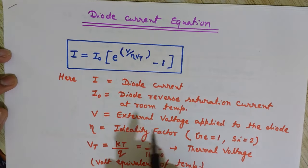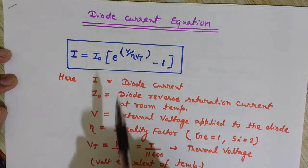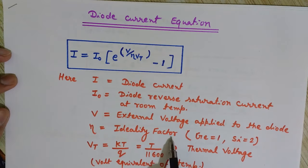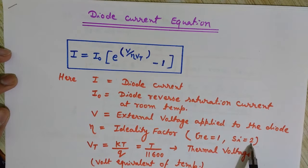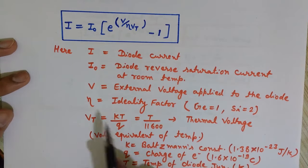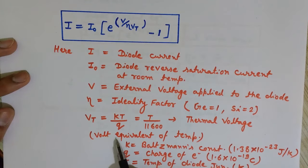Eta is the ideality factor. The ideality factor is 1 for germanium and its value is 2 for silicon — you should keep this in mind. VT is the thermal voltage, also known as the volt equivalent of the temperature.